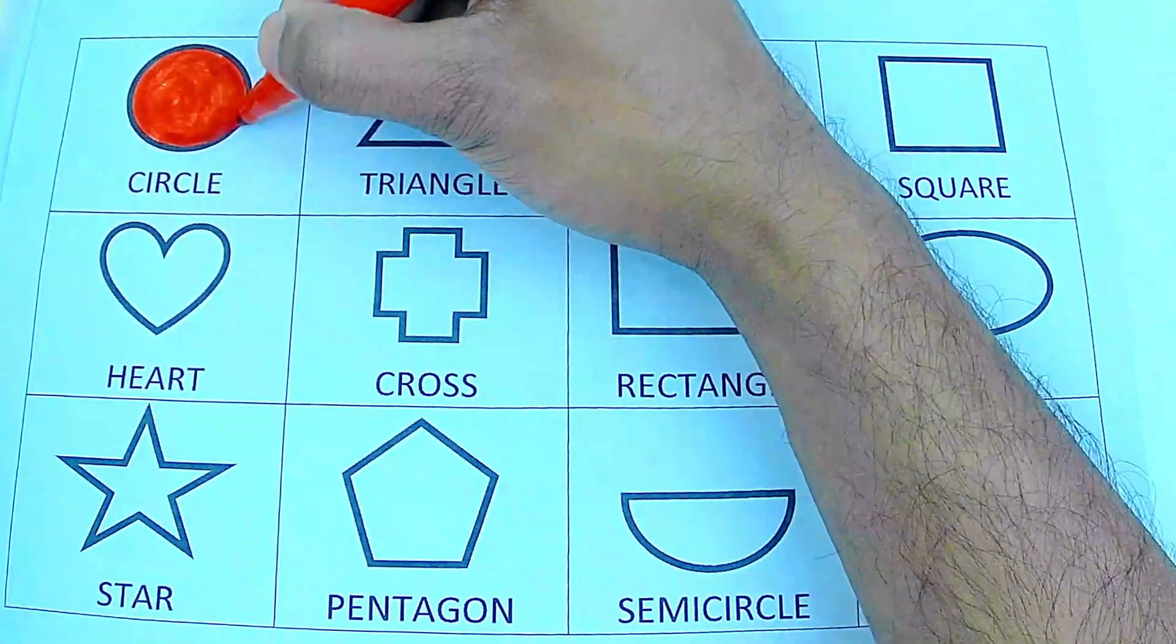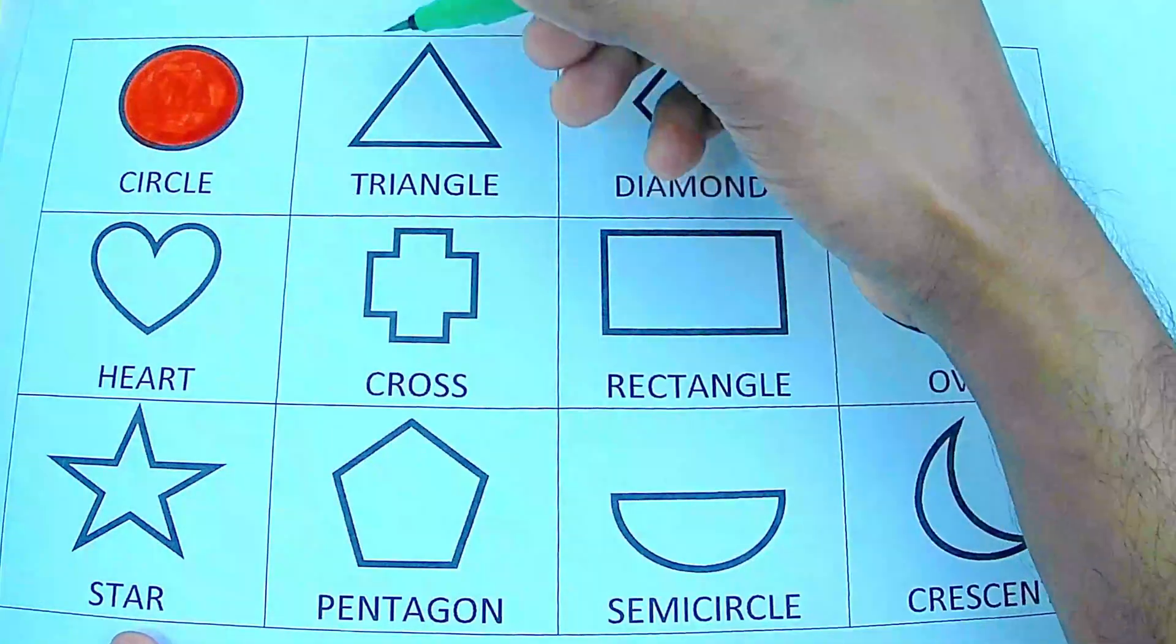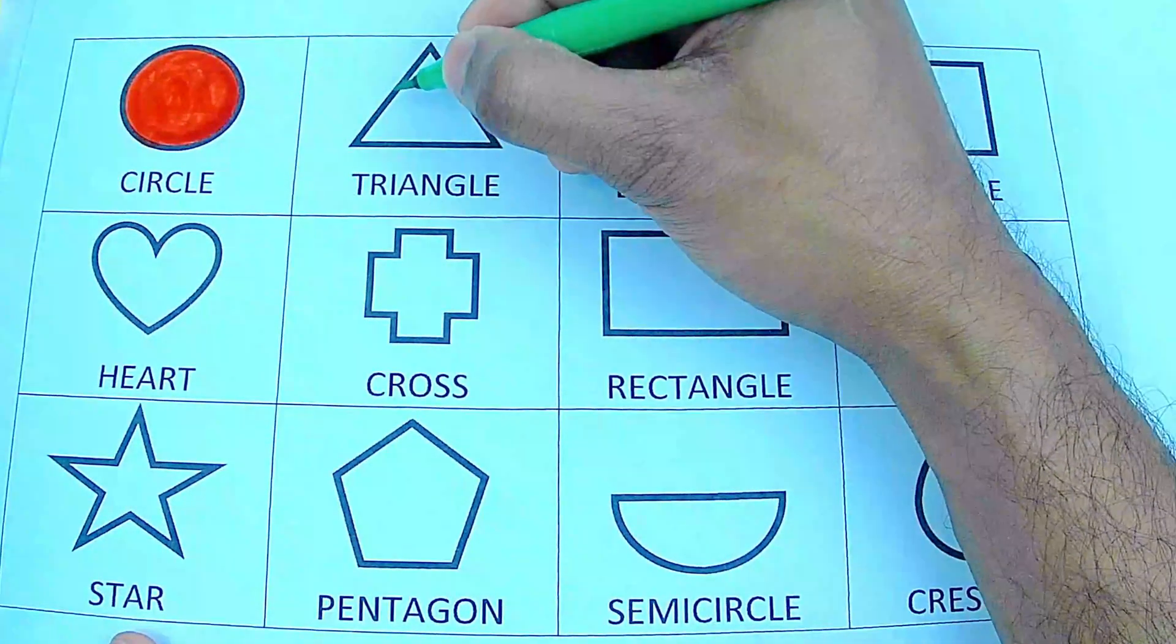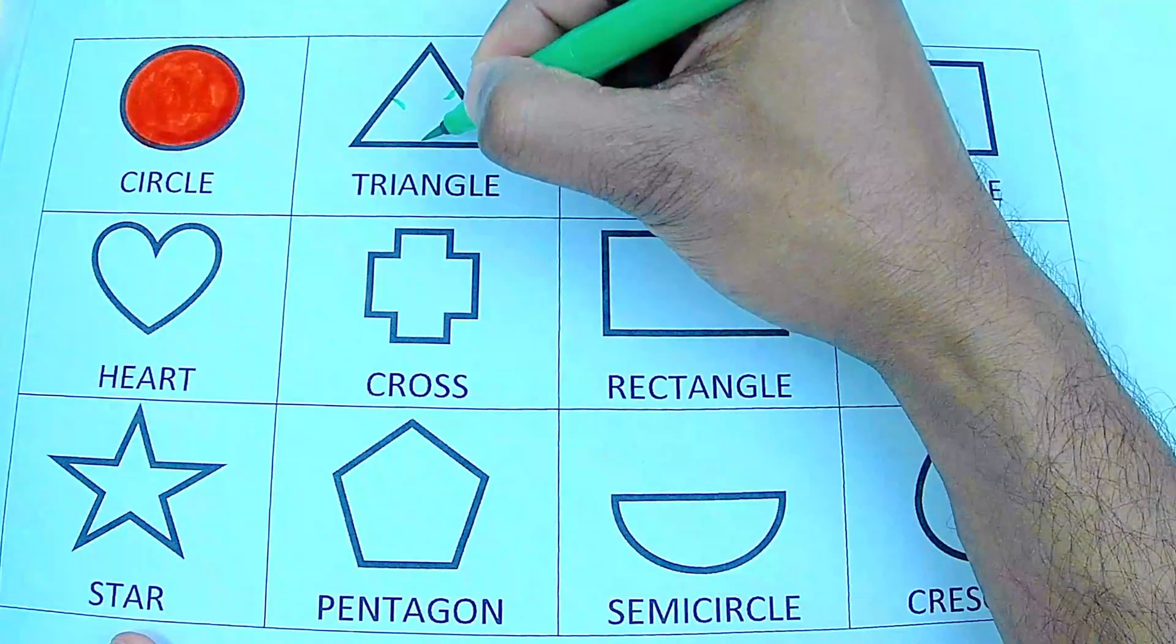Green color triangle. The triangle has three sides. One, two, three.